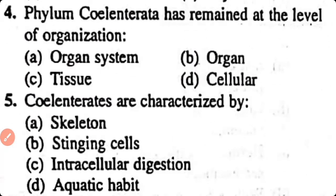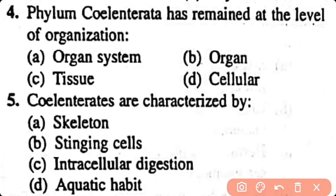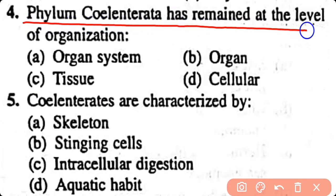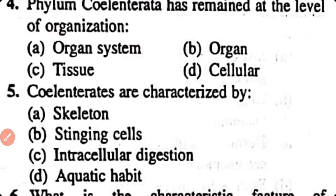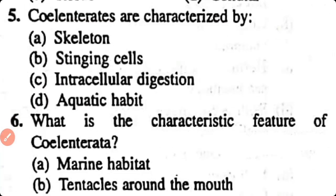Question number 4. Phylum Cnidaria has remained at the level of organization: organ system, organ, tissue, cellular. Option C. Tissue level of organization is present in phylum Cnidaria.